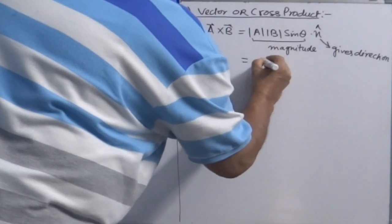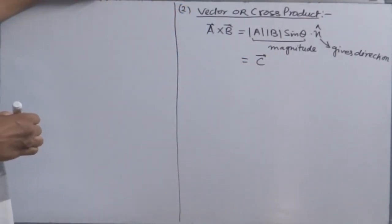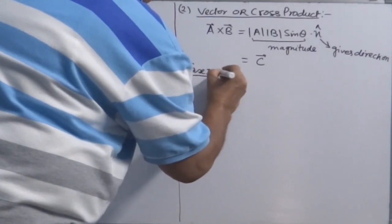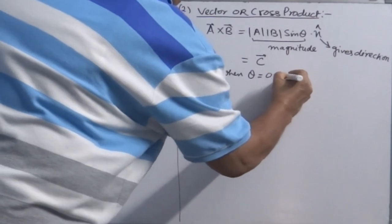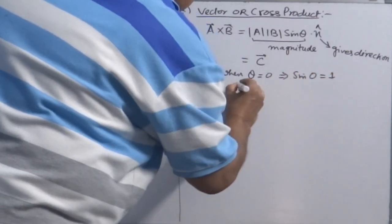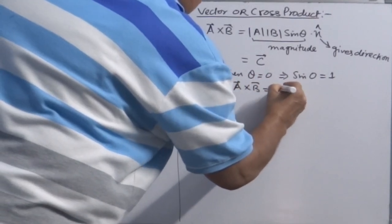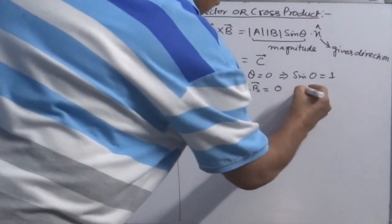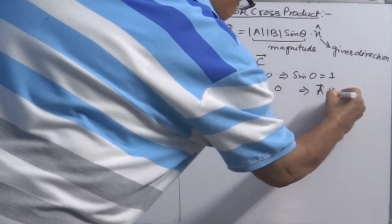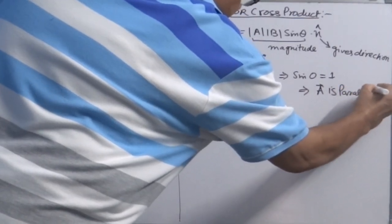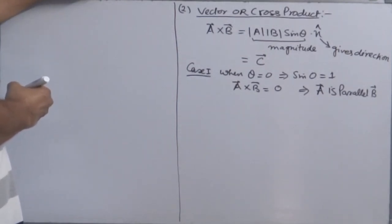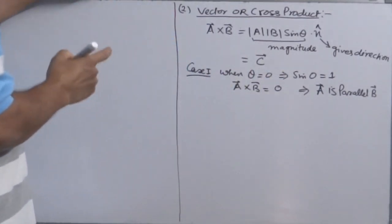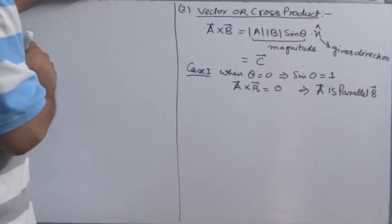So finally, there is a vector C obtained after taking the cross product of vectors A and B. Case 1: when theta is equal to zero, sine zero is zero, so the cross product of two vectors will be zero. You can utilize this property for proving that vectors A and B are parallel — find the cross product, and if it comes out to be zero, then they are parallel.